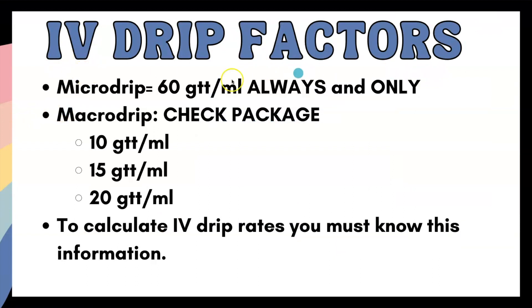Alright, so IV drip factors, what you need to memorize. There's a few things that you will need to memorize in regards to math for nursing, but you do need to remember that a micro drip is going to always be 60 drops per milliliter, always and only. Macro drip, you want to check the package. If it's a math problem, they will state it in the problem. They're going to tell you it's 10 drops per milliliter, 15 drops per milliliter, or 20 drops per milliliter. To calculate the IV drip rates, you must know this information.